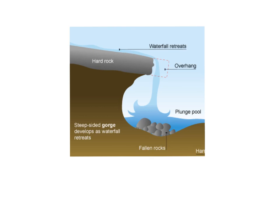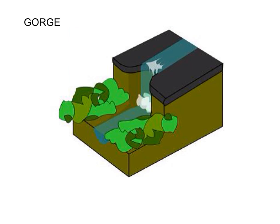What happens over time, therefore, is the waterfall retreats backwards — it retreats upstream and a gorge is formed, a steep-sided valley either side. Here's a picture showing a waterfall: the overhang from the previous picture will be here, and as the undercutting goes on in the plunge pool, that overhang is going to fall down and retreat again and again. If you can picture it retreating back and back, you'll be left with a really steep-sided valley all the way back — and that is the gorge.